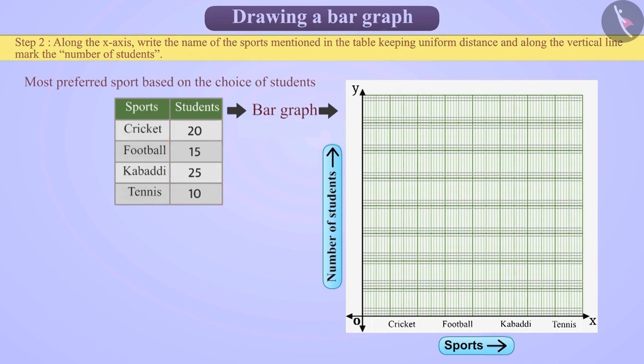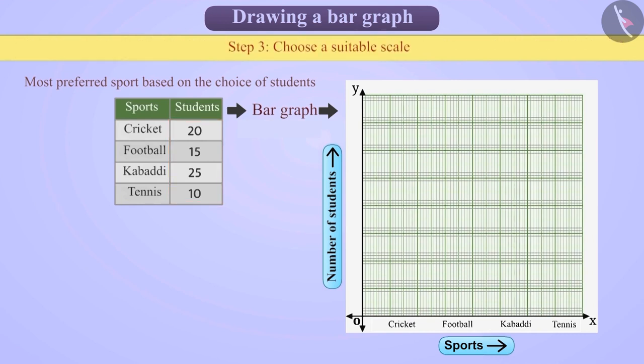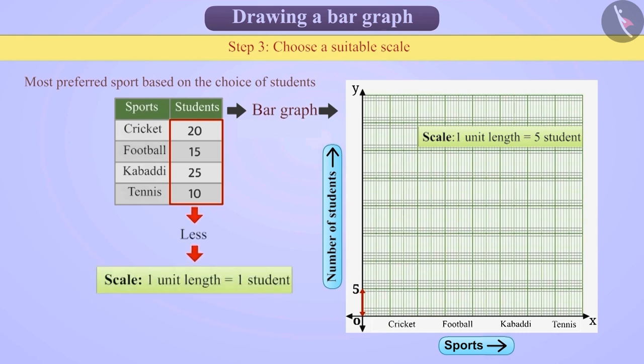Step 3: Next, we will choose suitable scale along the vertical line. Here, 1 unit length represents 5 students. Therefore, we will choose the scale as 1 unit length is equal to 5 students. You can choose a suitable scale based on the number, such that if the number of students is very less, then you can take 1 unit length is equal to 1 student.